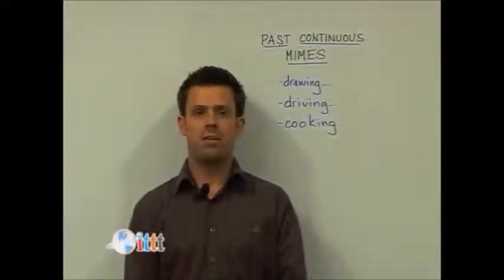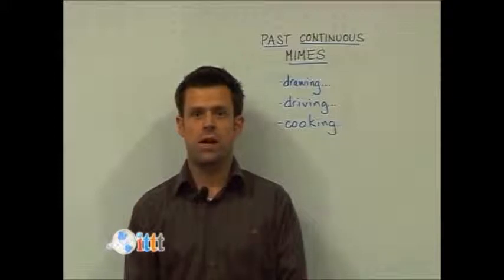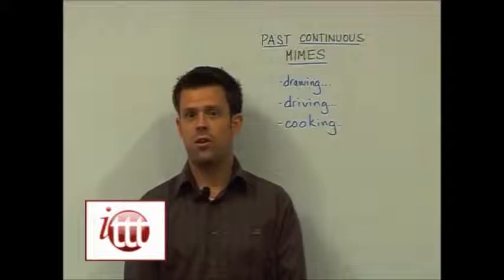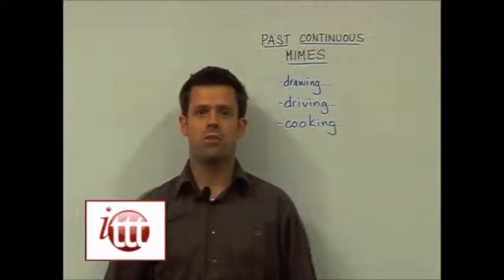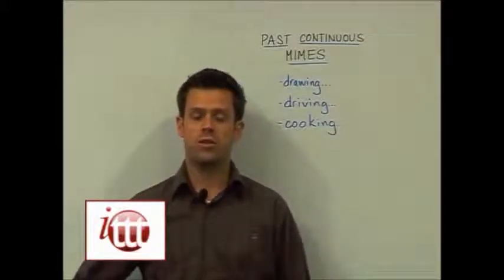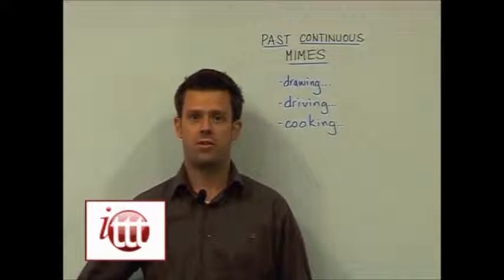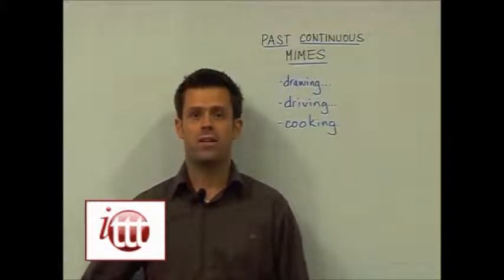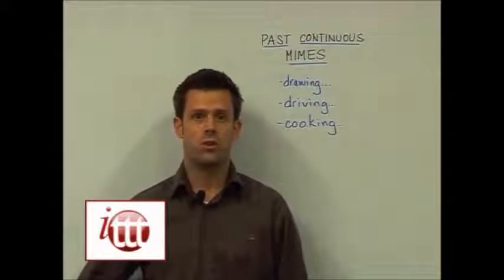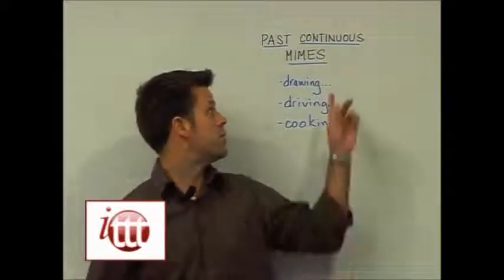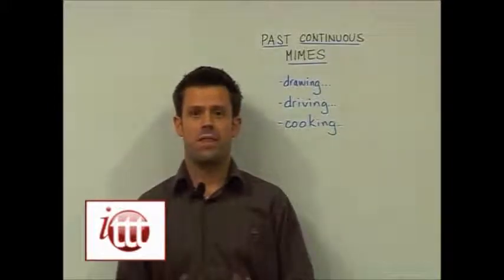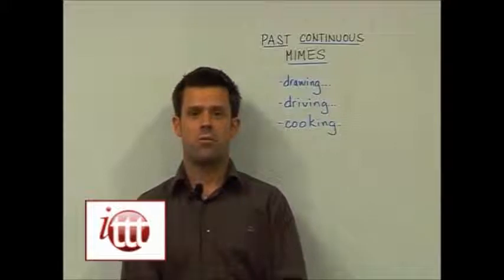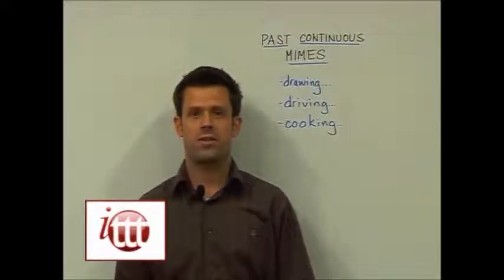Working from our previous MIME idea for the present continuous, we can use the same idea for the past continuous. The key difference is that while the student is doing the MIME, the audience is not able to guess what the person is doing. Instead, you'll have them stop first, then have the group make sentences in the past. A student may get a card such as 'Drawing', 'Driving', and 'Cooking', do their MIME and stop — only then can the rest of the students guess using the past continuous tense.